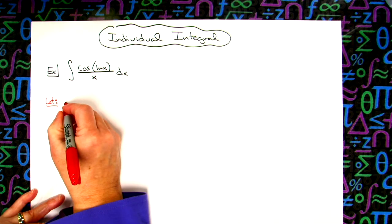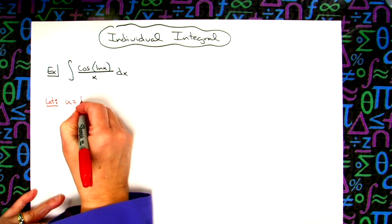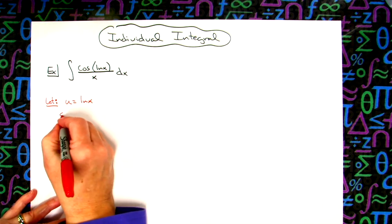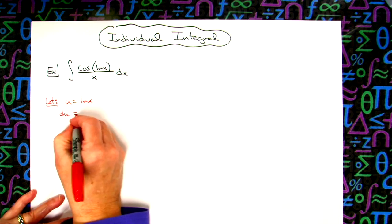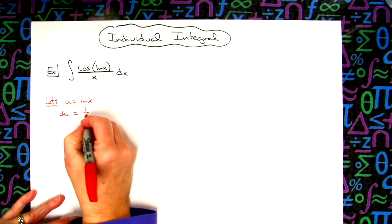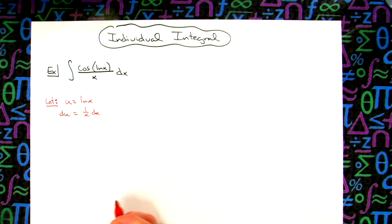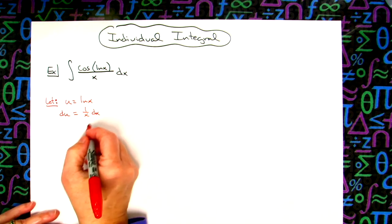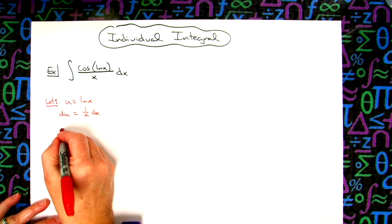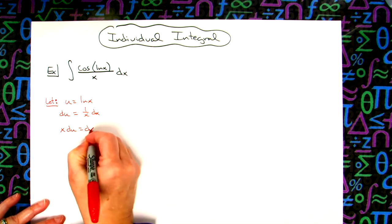So we're going to start with let u equal natural log of x. We're going to take the derivative of both sides, so du is equal to 1 over x dx. I want to go ahead and solve all the way down for dx, so I'll multiply both sides by x, and I'll have x du is equal to dx.